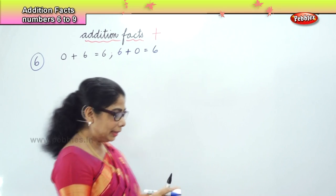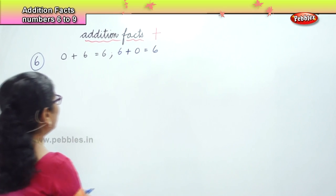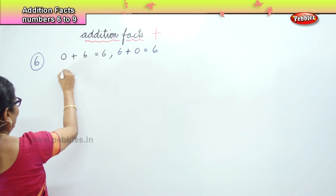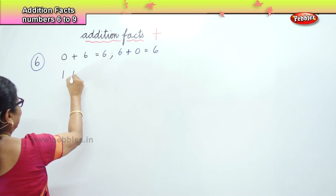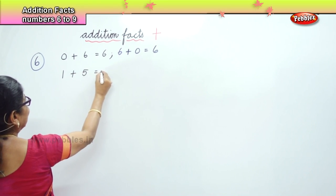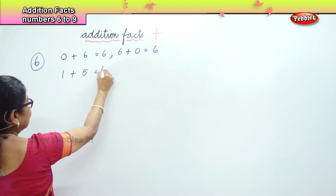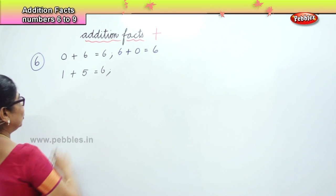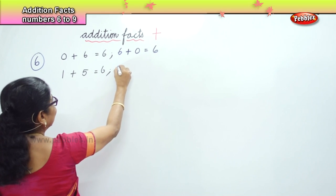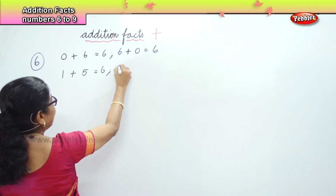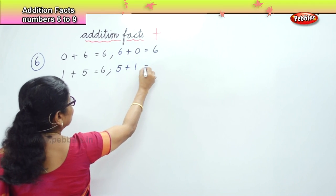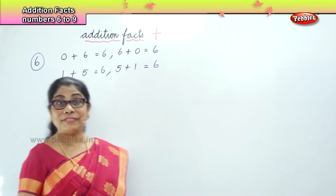The next one is 1 plus 5. 1 plus 5 is equal to 6. Next is 5 plus 1, which is also equal to 6.